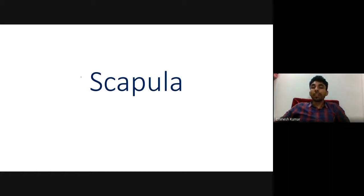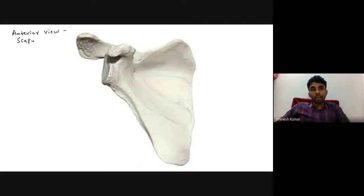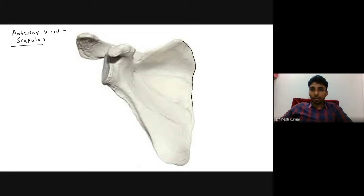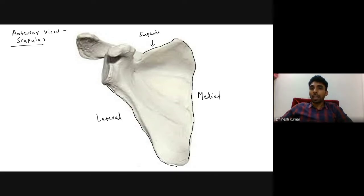In this video we are going to discuss the scapula bone. This is the anterior view of the scapula — we are seeing the scapula from the front. The medial border of the scapula is traced here, then the lateral border, and one more border called the superior border. These are the three borders of the scapula bone.